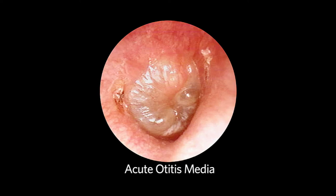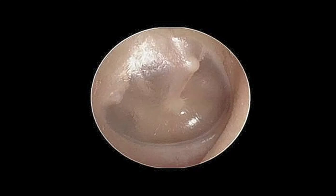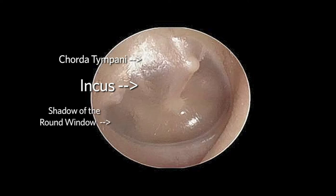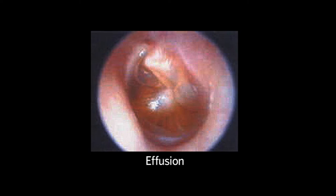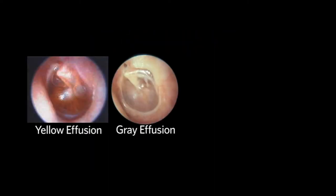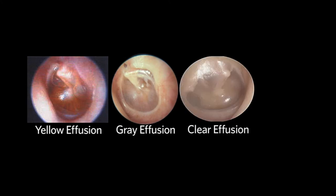In acute otitis media, the tympanic membrane is erythematous and may be bulging. When the tympanic membrane is translucent, one may often view normal structures of the middle ear. Posteriorly and superiorly, part of the incus may be seen, as well as the chorda tympani crossing from posterior to anterior. Posteriorly and inferiorly, one can see the shadow of the round window. Anteriorly and inferiorly, the shadow of the opening of the eustachian tube may be seen. A common middle ear abnormality, especially in the pediatric age group, is an effusion which may vary in color, such as yellow, gray, clear, or blue.